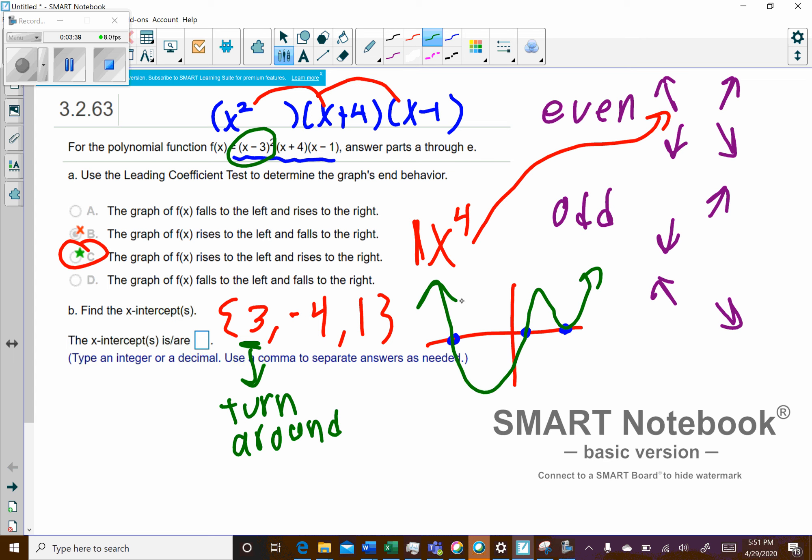So that's, my graph looks something like that. It's probably not perfect, but it's a nice rough sketch. So my other solutions, negative 4 and 1, those are going to cross.